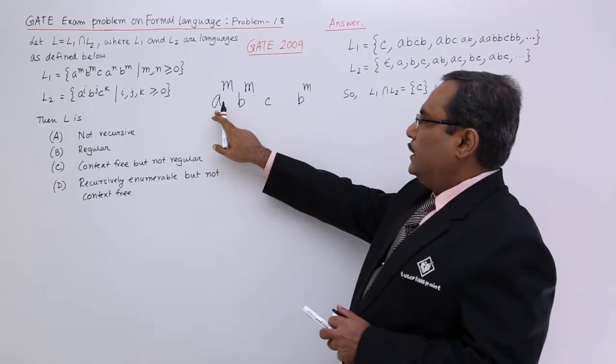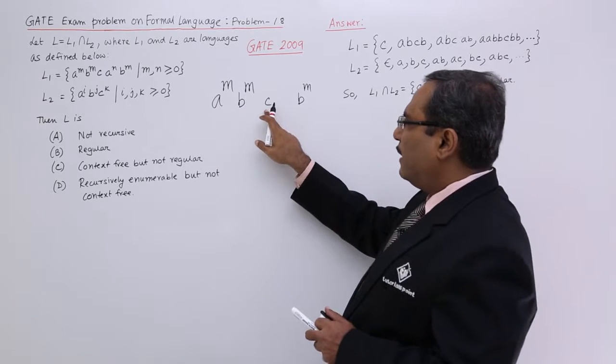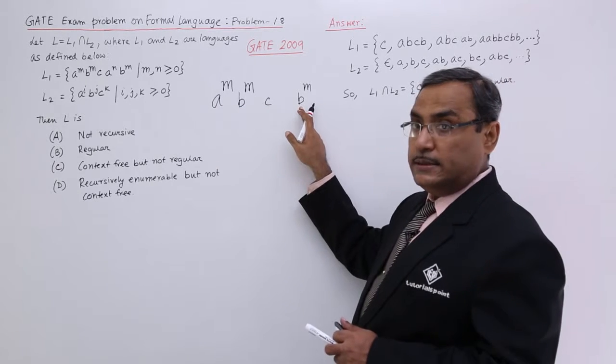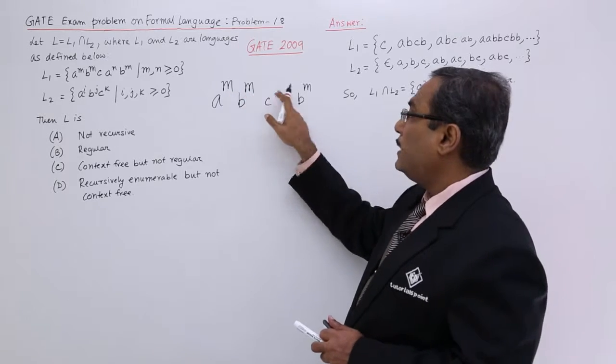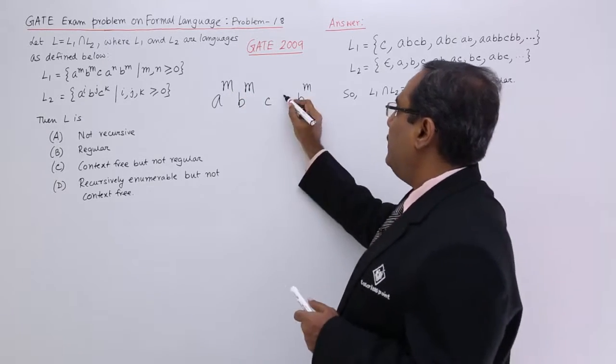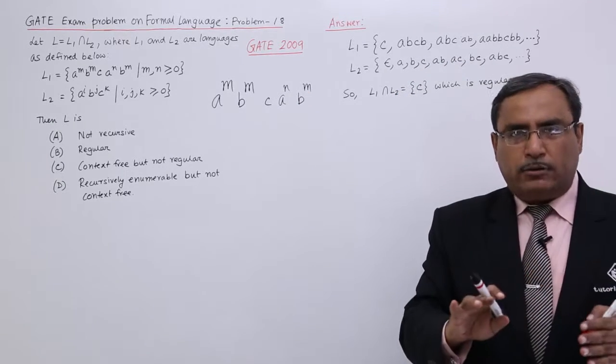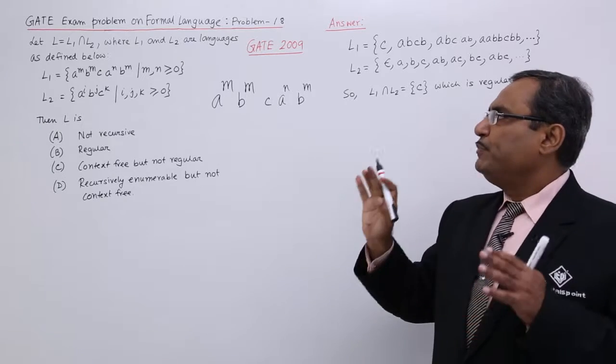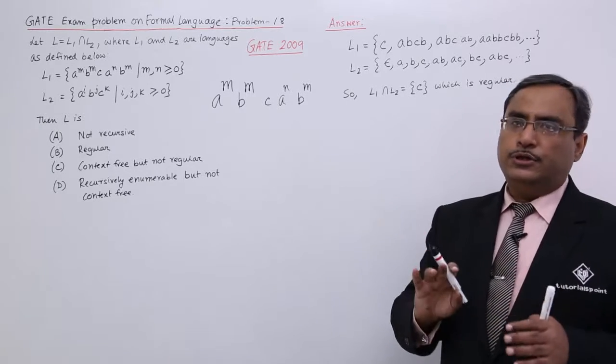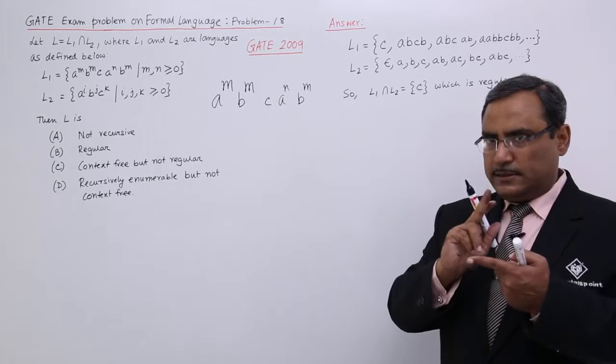That means equal number of A's and B's, and then after C equal number of A's and B's, because both are having the respective powers M and N. Obviously, here we will be having some number of A's and M and N are not at all related, but it has been told that M, N are greater than or equal to 0. So I want to point out one point, please notice.